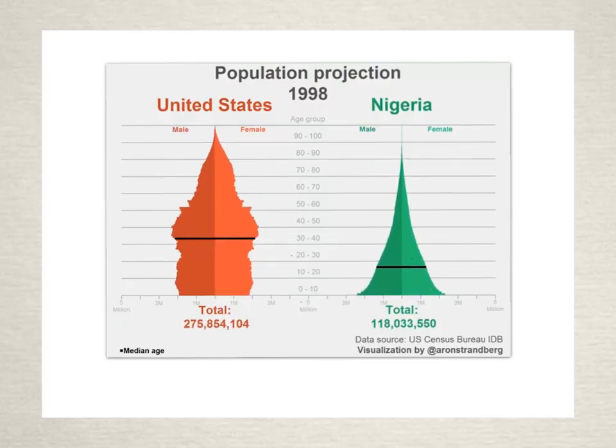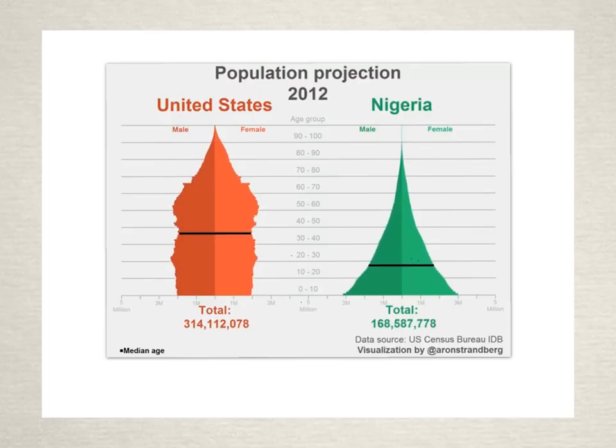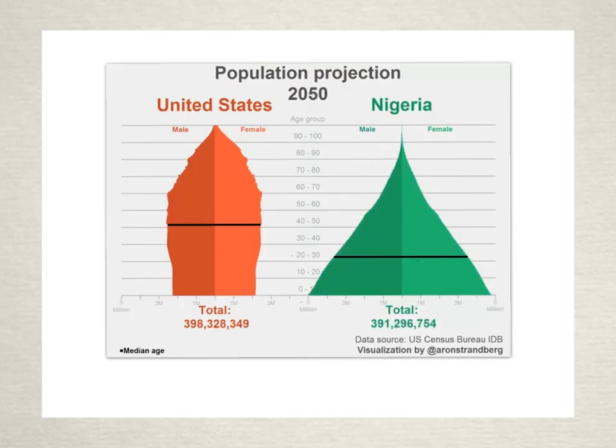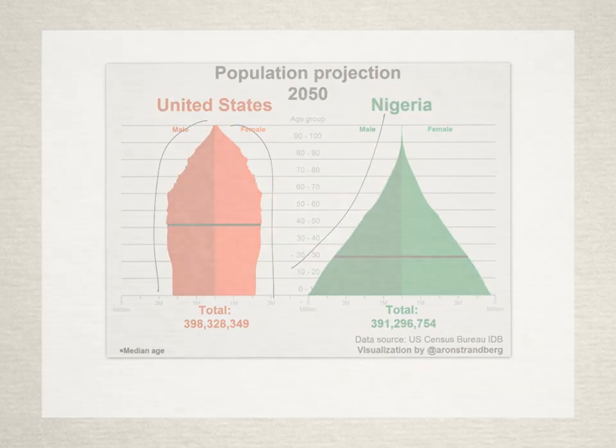But Nigeria having that kind of exponential growth that we were discussing. As you can see, they're catching up very quickly to the United States to the point where in the future they will take over them. Okay, so that's a clear visualization of this process of different countries having growth that is clearly seen by the trends that we see here in their population pyramids.